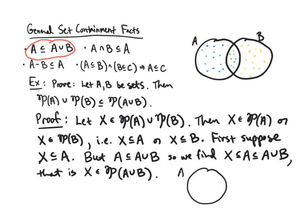Pictorially: if you have a subset X of A — choosing some blue and green elements — you can view that same subset as a subset of A∪B by expanding the picture to include B. The subset X doesn't reach into B, so it is still a valid subset of A∪B. That is the move in the formal proof.